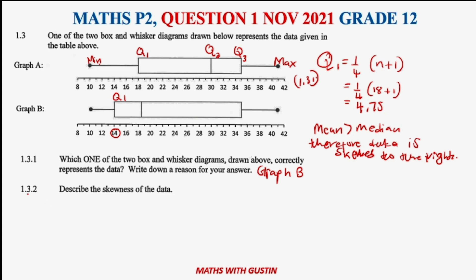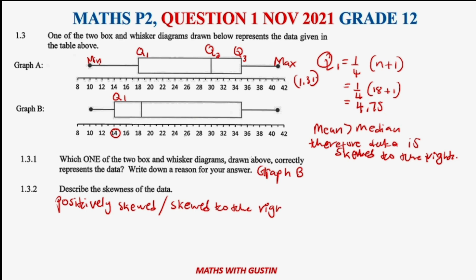Question 1.3.2 asks us to determine whether the data is positively or negatively skewed — comment on the skewness. Just to highlight: if the data is skewed to the right, it is positively skewed. If it is skewed to the left, it is negatively skewed. So here, the data is positively skewed, or skewed to the right.